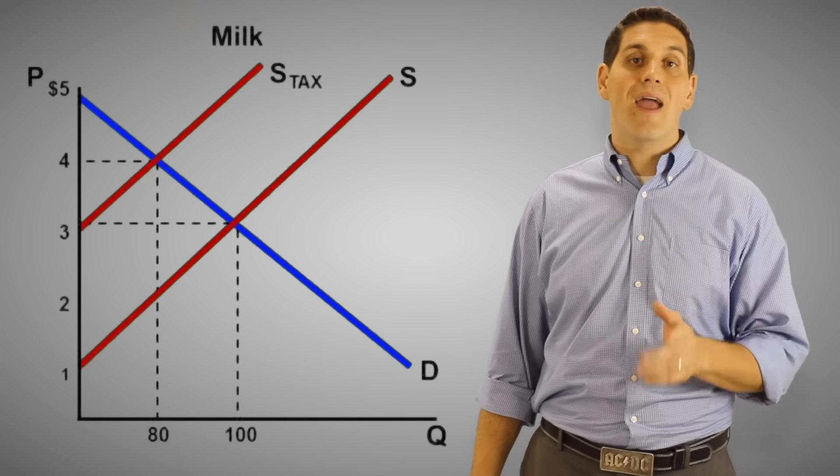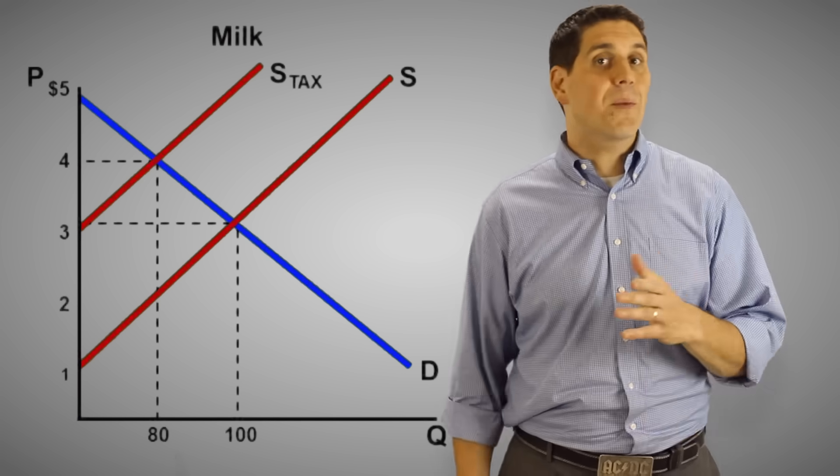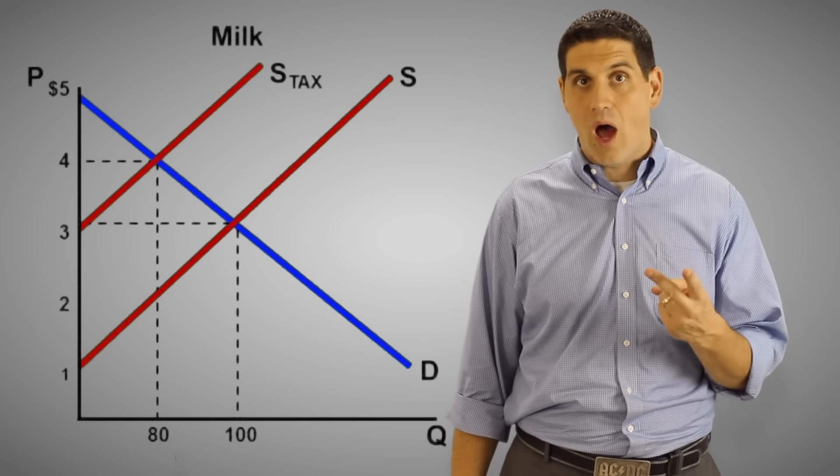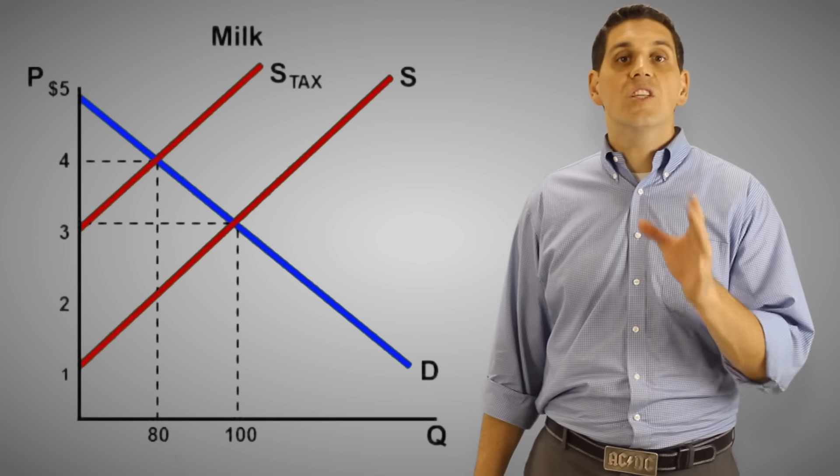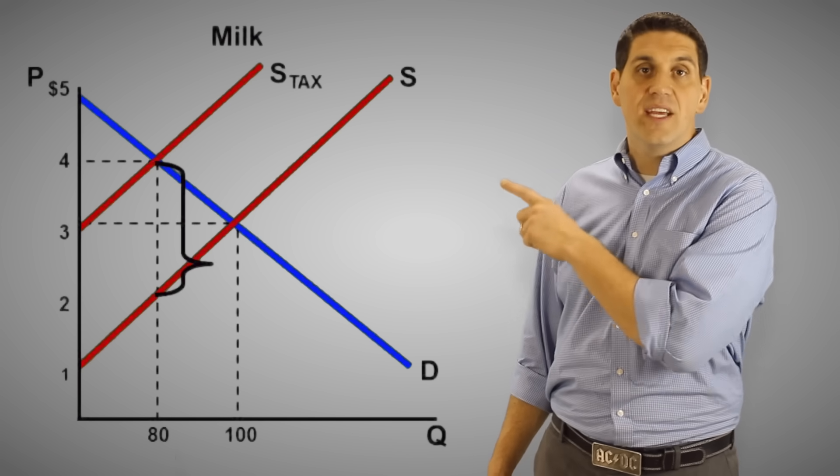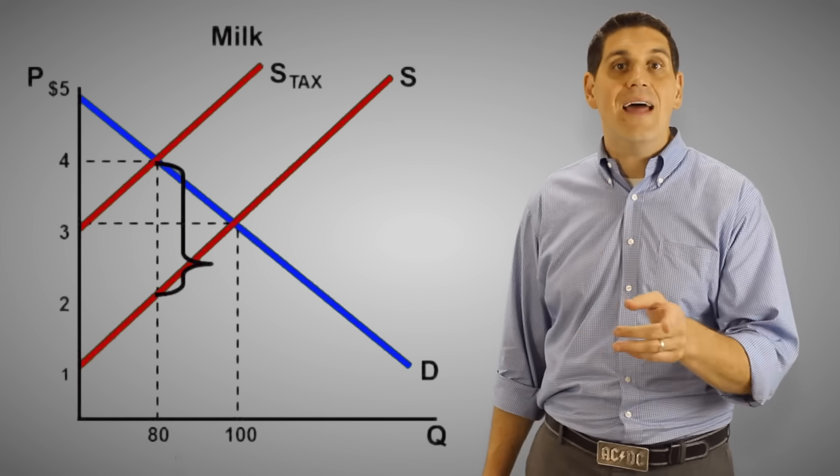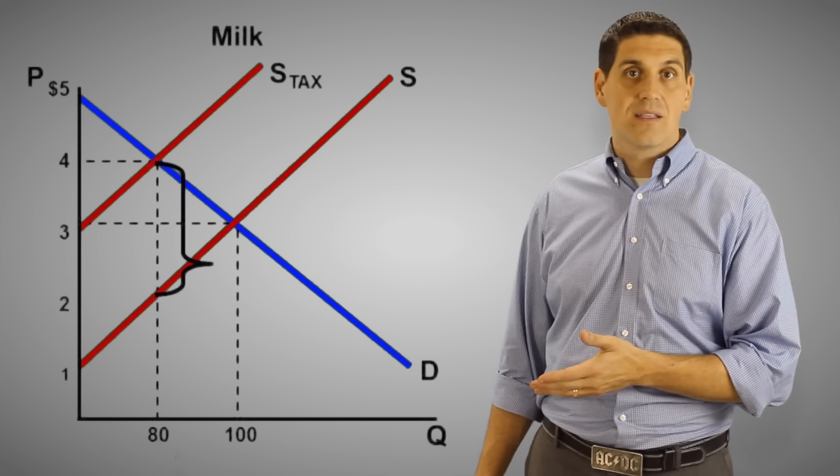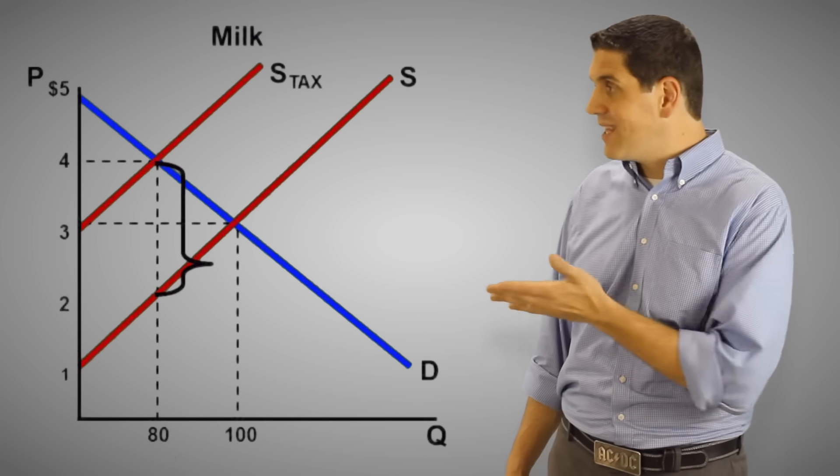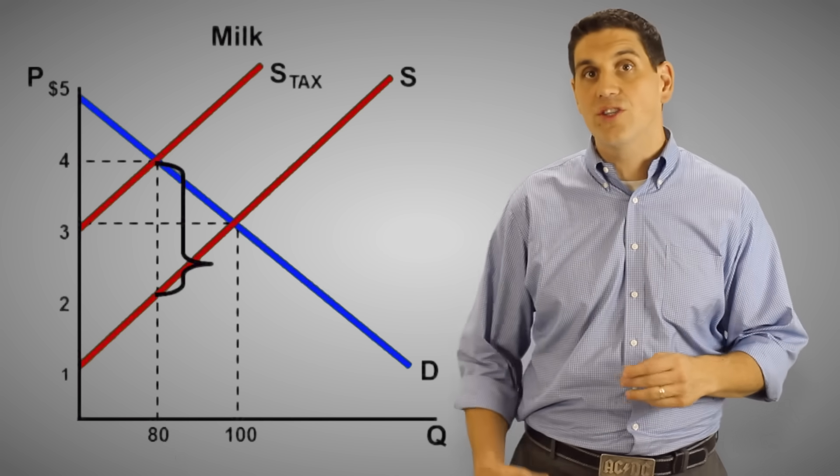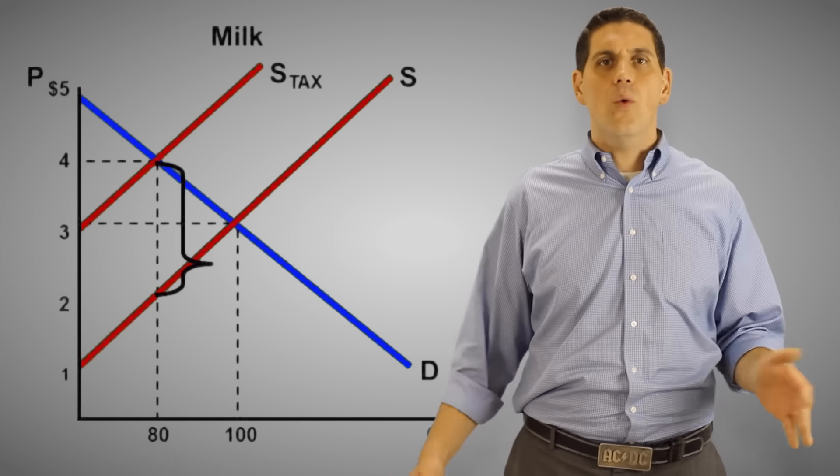The price that consumers pay is now right here $4. But the producers don't get that $4. Remember they have to pay a $2 tax. So they don't get $4, they get only $2. The way you can spot this is by looking at the vertical distance between these two supply curves. That tells you the per unit amount of the tax. So that vertical distance is $2. And so the producers only get to keep $2 of the $4 consumers pay. Where does the other $2 go? Well, to the government.